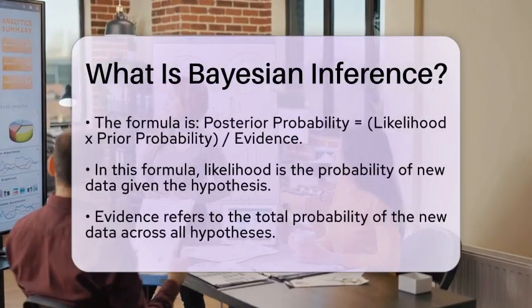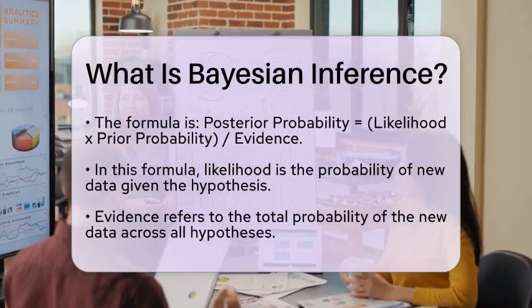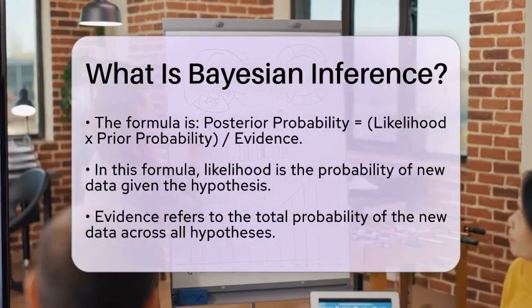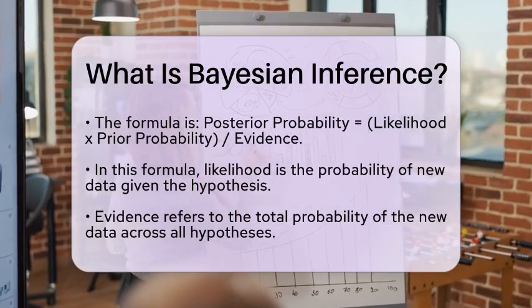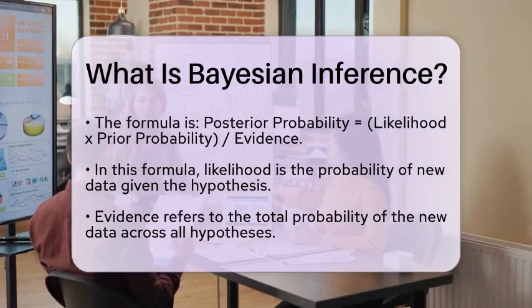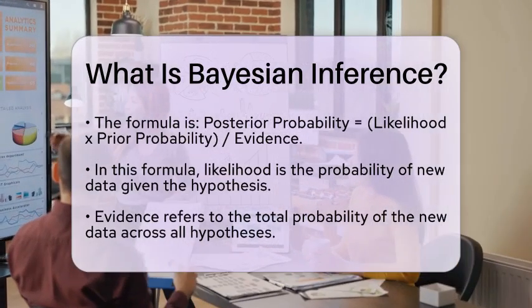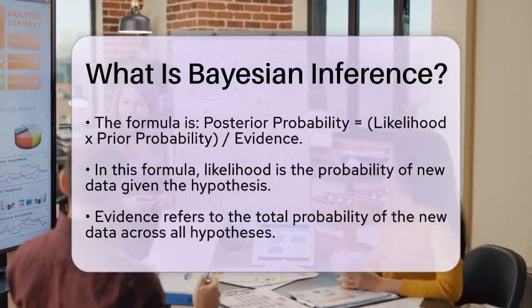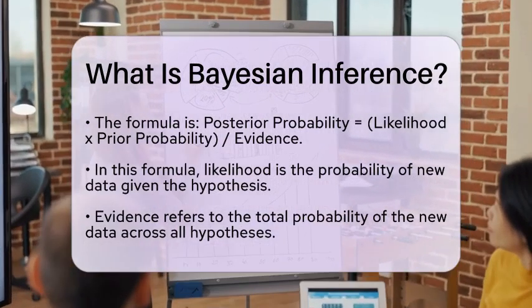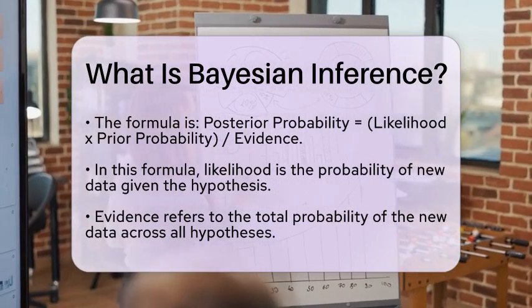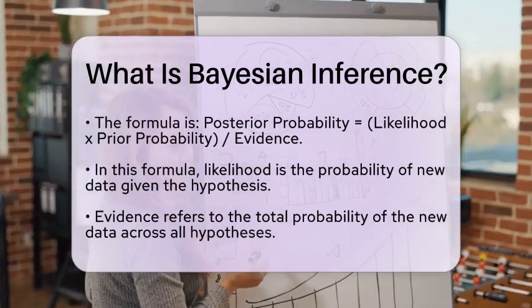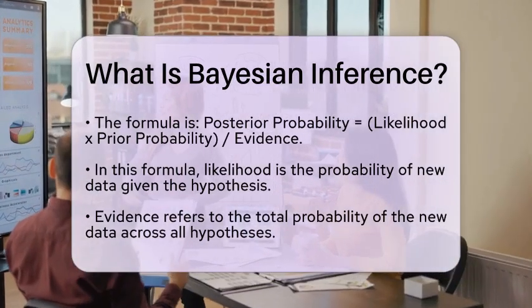Bayes' theorem itself is a mathematical formula that relates the conditional and marginal probabilities of random events. It can be expressed as: Posterior probability = (Likelihood × Prior probability) / Evidence. In this equation, the likelihood represents the probability of observing the new data given the hypothesis, while the evidence is the total probability of the new data under all possible hypotheses.